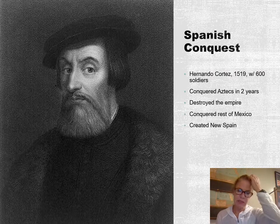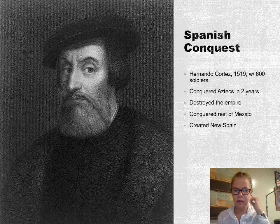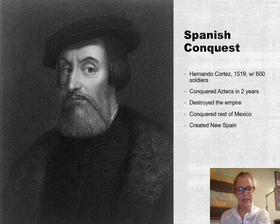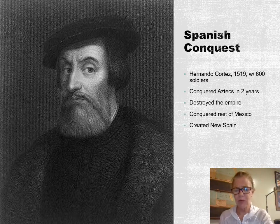It did take two years to conquer, but Cortés did it not through much warfare — mainly by sitting back and watching the indigenous populations die from smallpox and other diseases. He basically destroyed the empire, conquered the rest of Mexico, declared it in the name of the king and queen of Spain, became very wealthy from all the gold they found, and created New Spain — a vast territory including Mexico, California, Arizona, New Mexico, parts of Texas and Colorado.